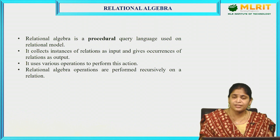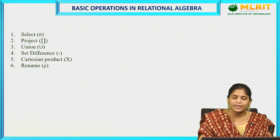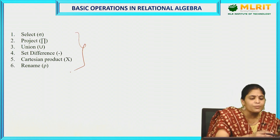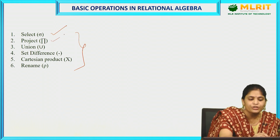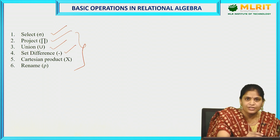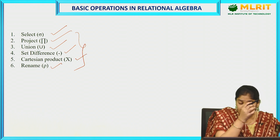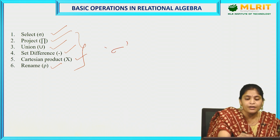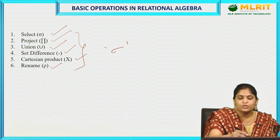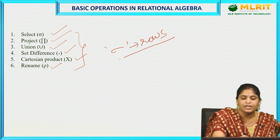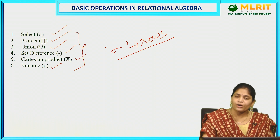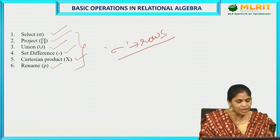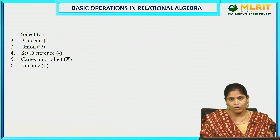The six basic operations in relational algebra are: select operator, project operator, union operator, set difference operator, Cartesian product, and rename. The select operator is represented by sigma (σ) and is used to retrieve particular rows from a relation or table based upon a defined condition.